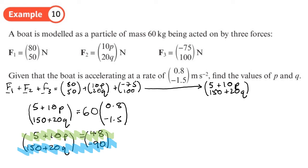So we have 5 plus 10p equals 48. So from there we will get 10p equals 43, which means p equals 4.3.